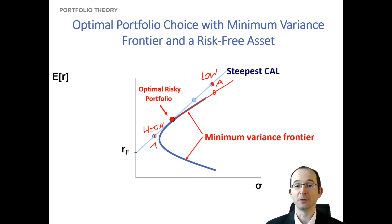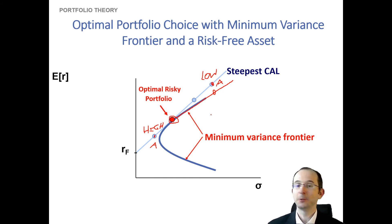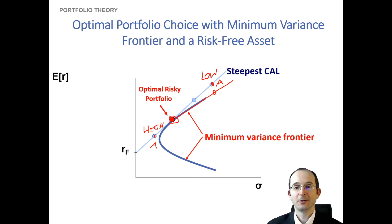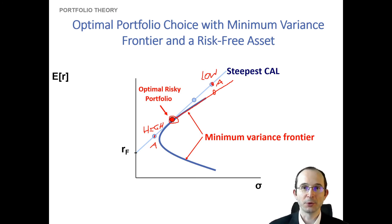This is a graphical illustration of the mutual fund separation idea: everybody will hold some proportion of the optimal risky portfolio, and they'll all have the same individual weights on the risky assets within it. That is, the weight we calculated for asset one — everybody will have proportionally that same ratio of asset one to asset two in their risky portfolio; they might just hold more or less of both. Whatever is not invested in the risky asset will be invested in the risk-free asset.